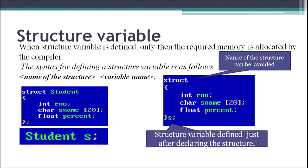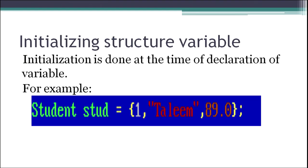After declaring a structure, we have to initialize the structure variable. If we want to initialize it with some values, we have to do it at the time of declaration of the variable itself. For example, for structure student and variable stud, it has three values: one for roll number, one for s_name, and 89.0 for the percentage. All these values are to be provided in curly braces followed by a semicolon.